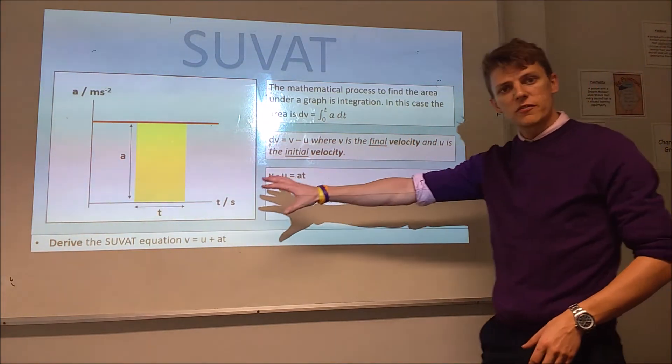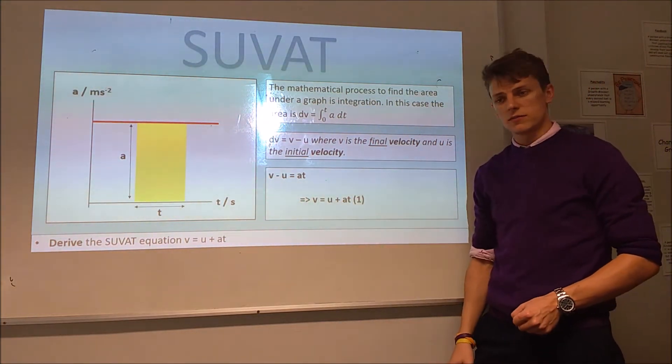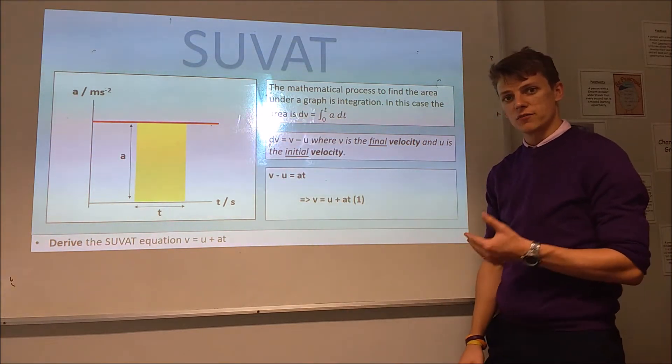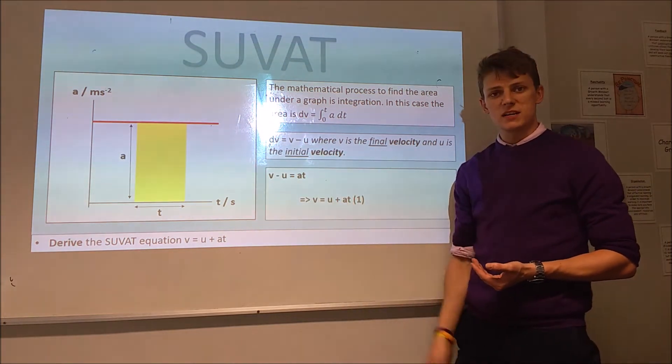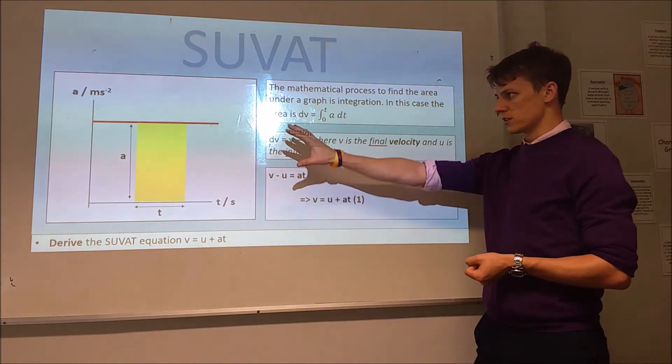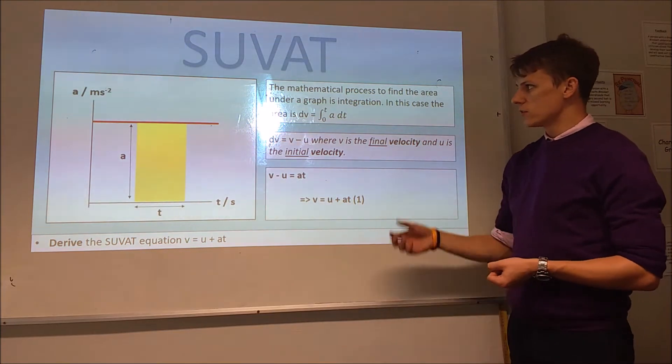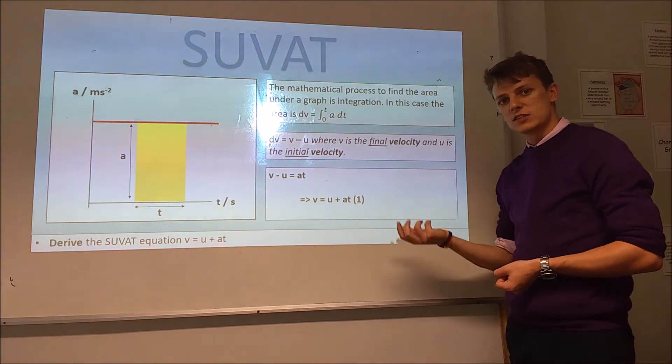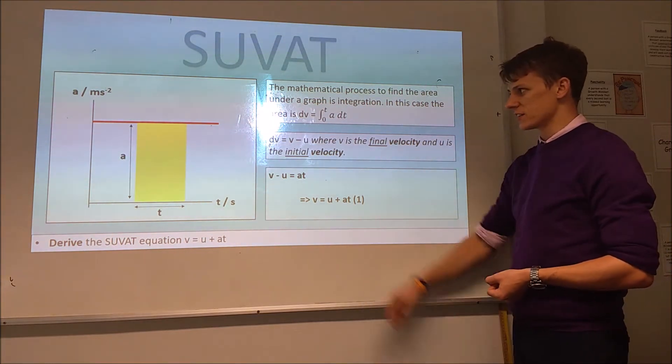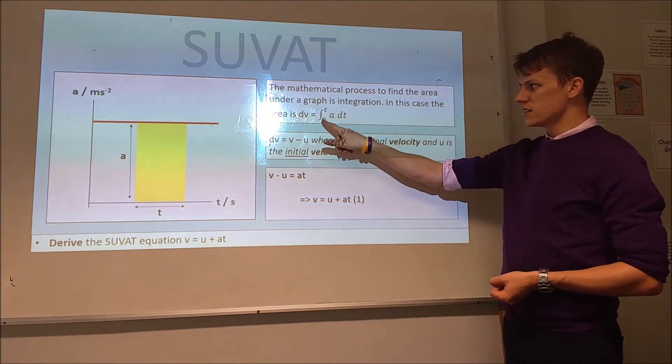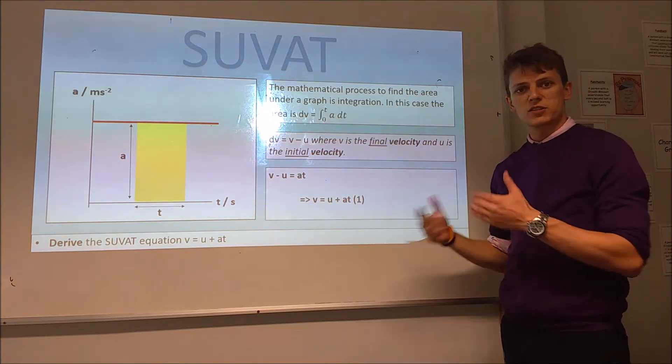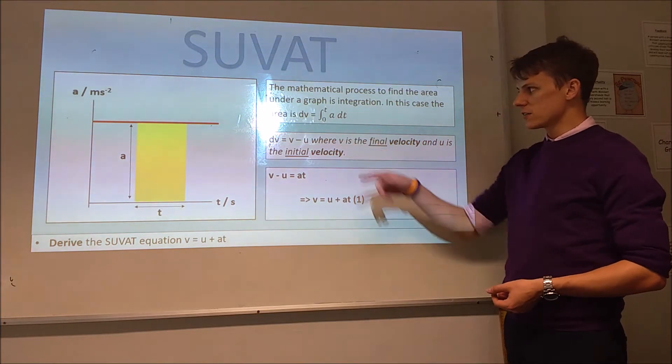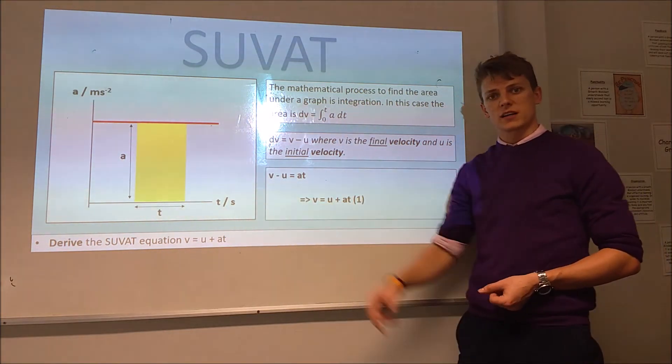So, you should know from before that to get the change in velocity of an object, you want the area under an acceleration versus time bar. And when we're dealing with SUVAT, we know acceleration is constant, so we know it looks like that. So, from maths, you should know, to find the area, what you do is you integrate with respect to whatever's on your x-axis. So, change in velocity is going to be the integral between zero and t, so essentially between when we start and when we finish, of acceleration with respect to time, because time is on our x-axis.